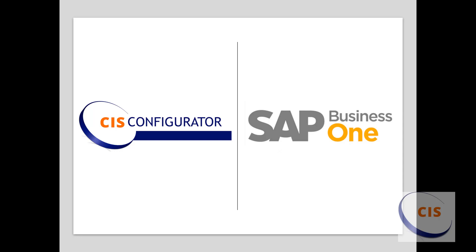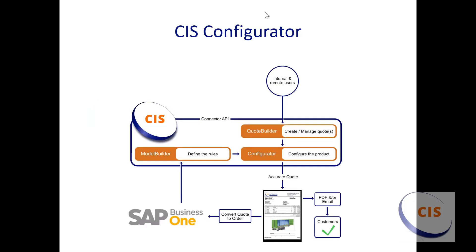CIS Configurator is a Configure Price Quote application that is seamlessly integrated with SAP Business One. CIS contains three components that interact with SAP Business One. The Model Builder, used by the product expert to define the rules and logic.